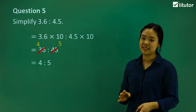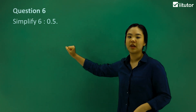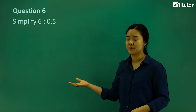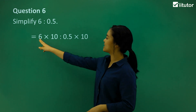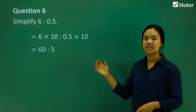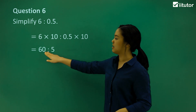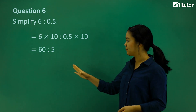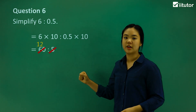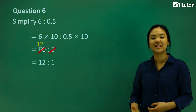So let's do question 6 — simplify 6 to 0.5. Again, we want a whole number since it's a decimal, so we multiply each side by 10. 6 times 10 to 0.5 times 10 gives us 60 to 5. We simplify further — both are divisible by 5. 60 divided by 5 is 12, and 5 divided by 5 is 1. So the final answer is 12 to 1. And that's how we simplify ratios!